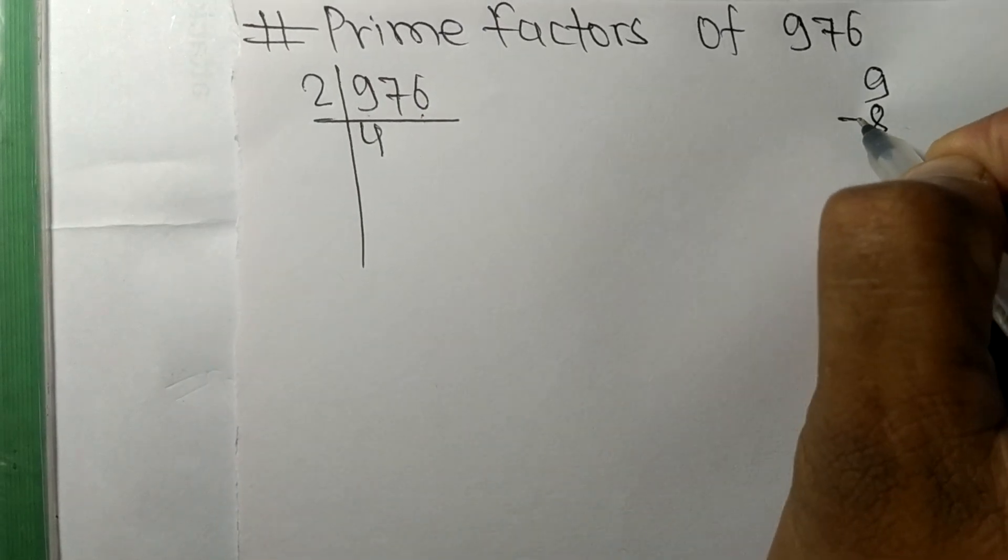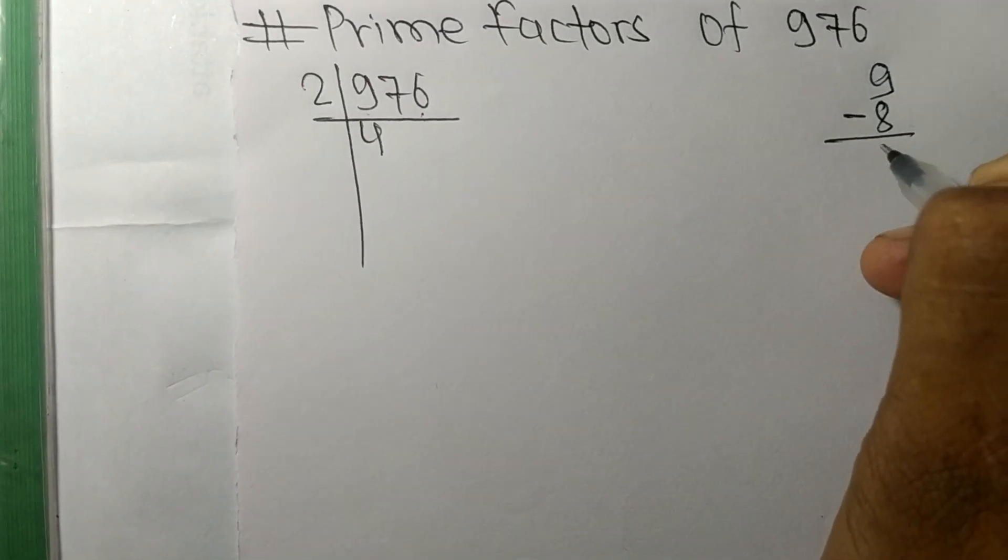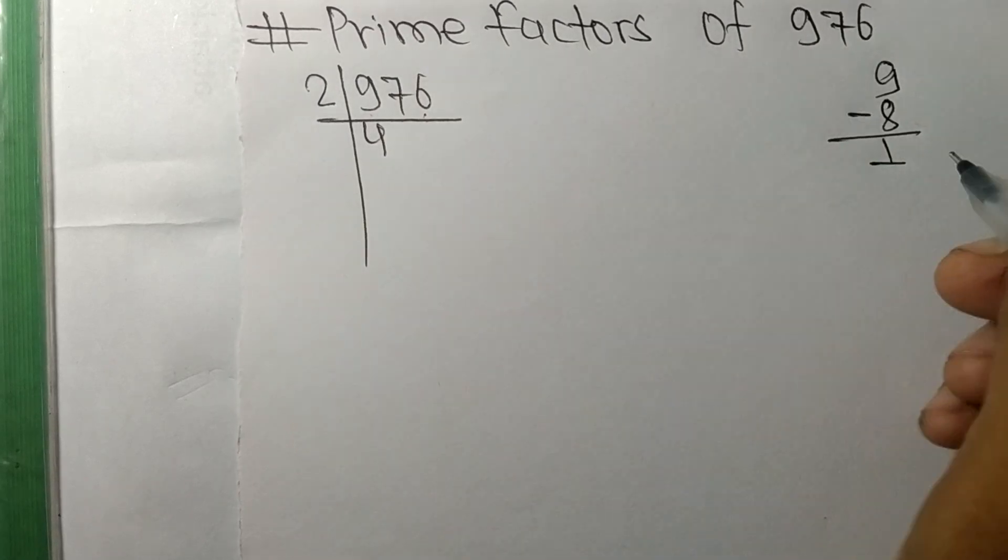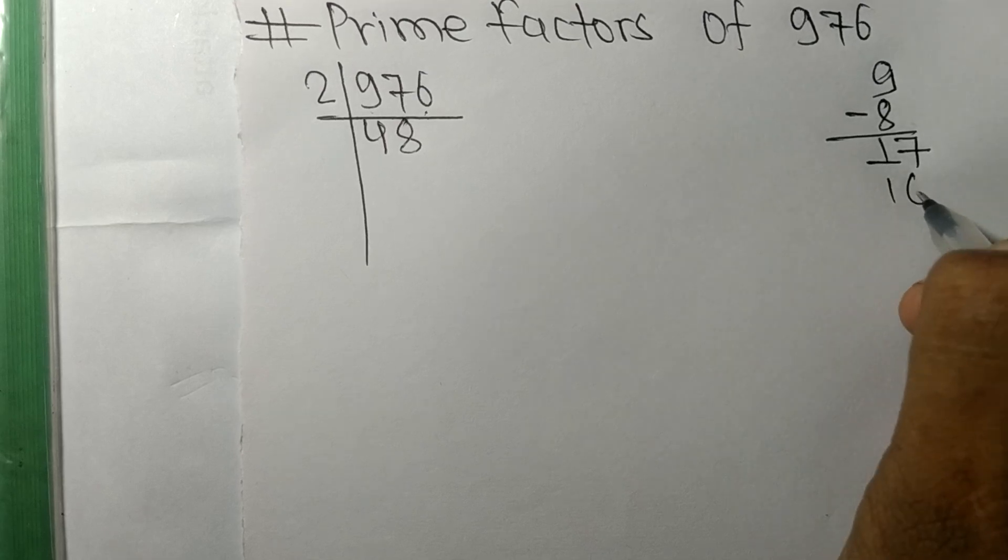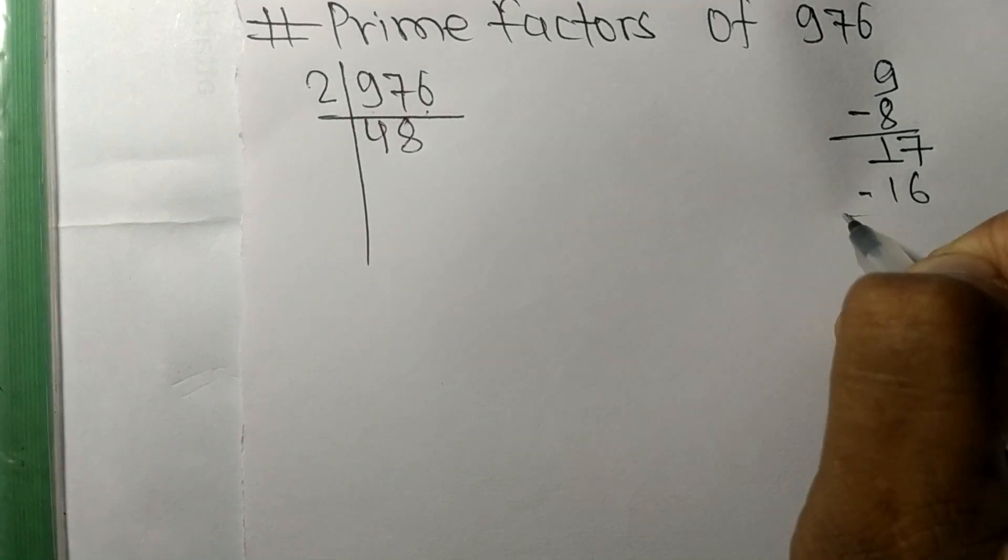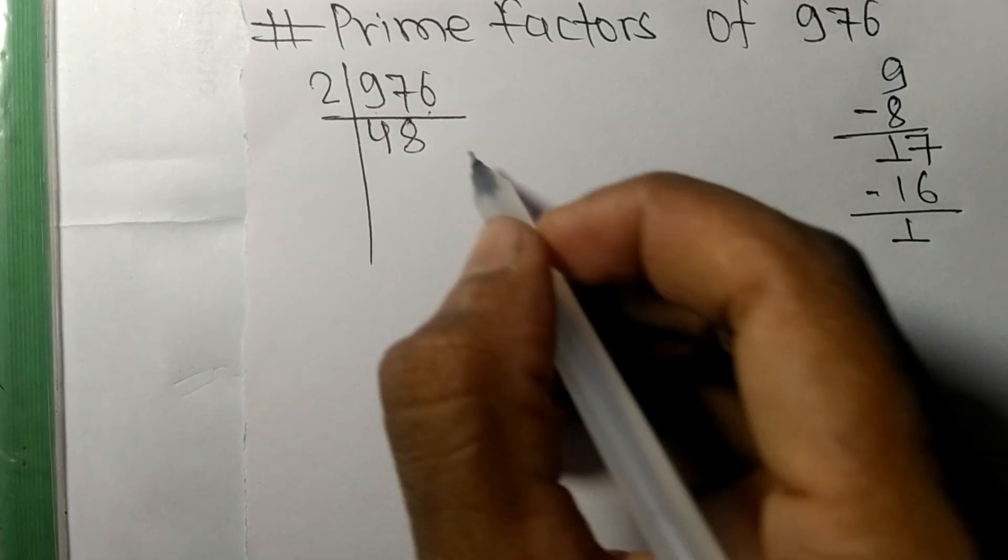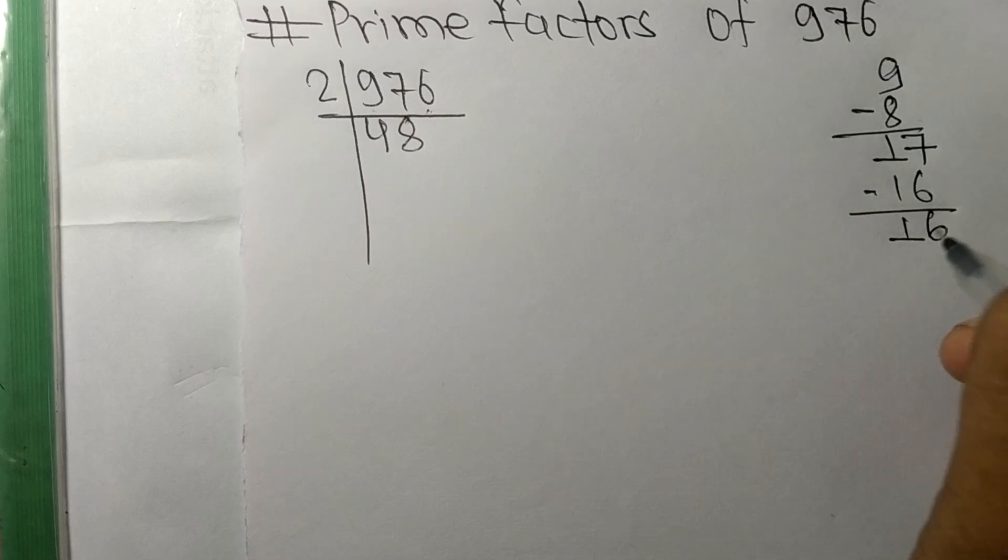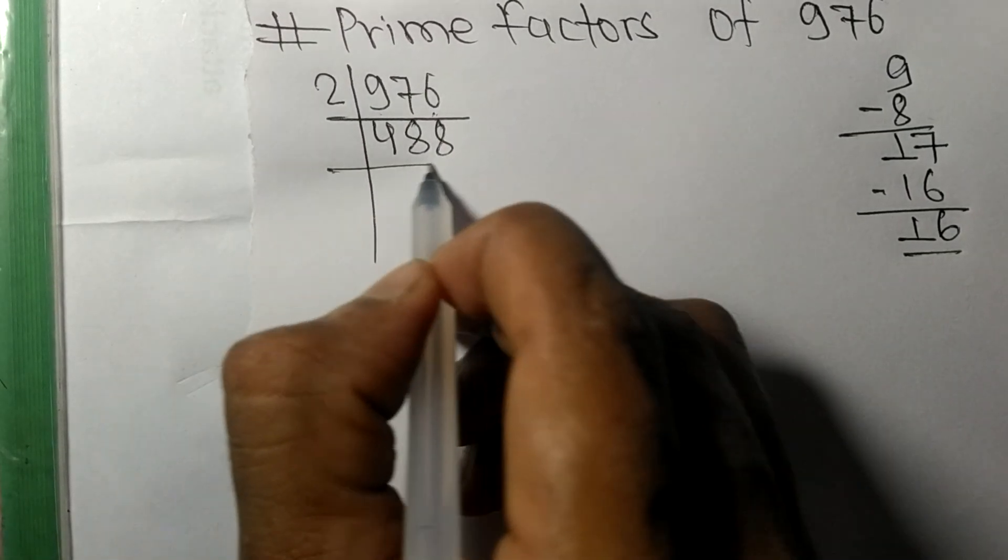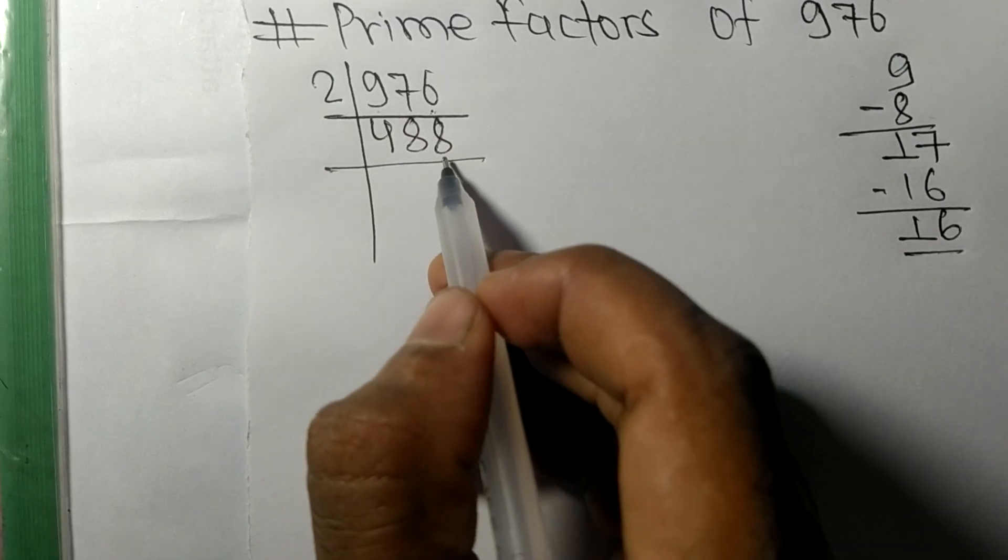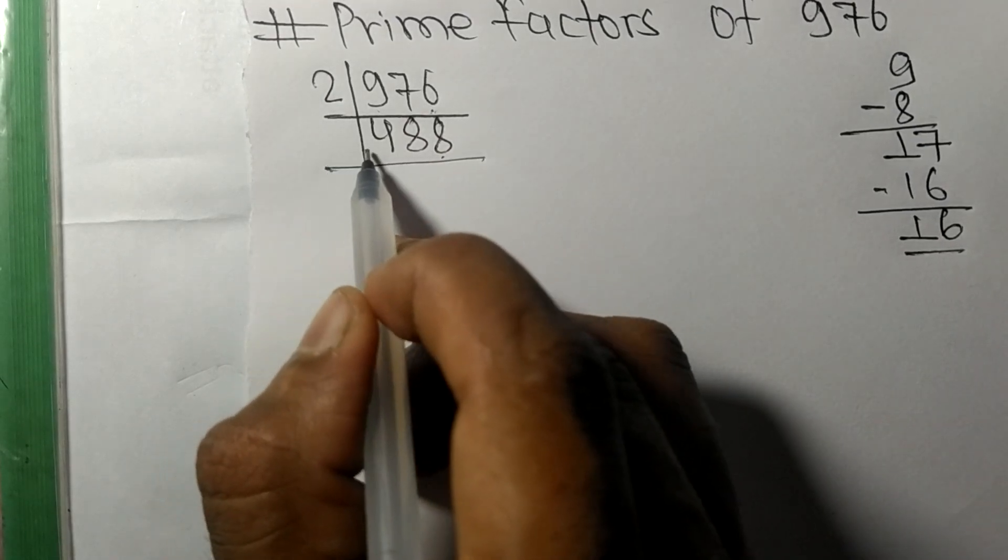This 7, 17. So 2 times 8 means 16. On subtracting we get 1. This 6, 16. 2 times 8 means 16. Again we have even number 8 at last, so it is exactly divisible by 2.